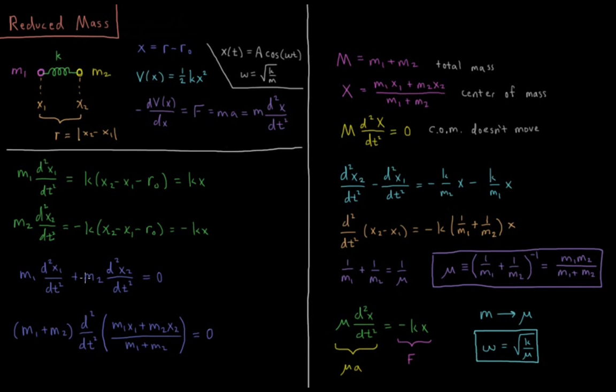We're going to factor out m1 plus m2, and then multiply times the second derivative with respect to time of (m1x1 + m2x2), and then divide by m1 plus m2 to get this m1 plus m2 to factor out. So we have m1 plus m2 is the total mass of the system, we're going to call that big M, and this quantity, (m1x1 + m2x2)/(m1 + m2), is actually the center of mass of the molecule.